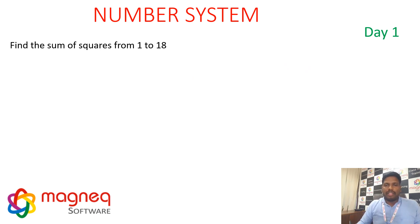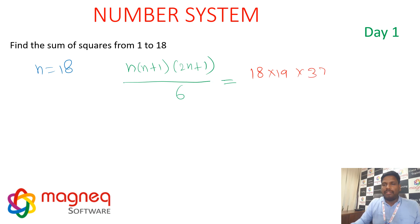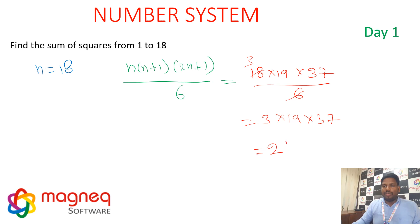Find the sum of squares from 1 to 18. n = 18. Formula: n(n+1)(2n+1)/6 = 18 × 19 × 37 / 6. Simplifying: 3 × 19 × 37 = 2109.